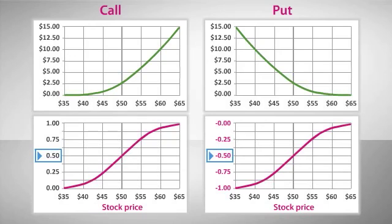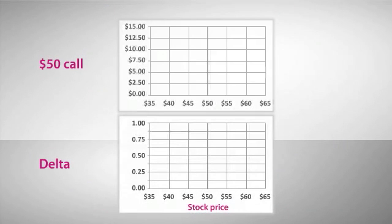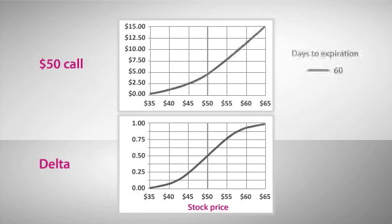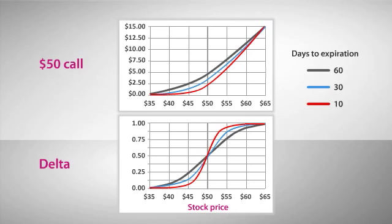One more thing to understand about delta is that it changes over time. If we look at this hypothetical call option again, we can see how both the theoretical option value and the delta changes as the option nears expiration. As time goes by, the delta becomes even more sensitive to smaller price movements near the strike price. Note that as expiration approaches, the delta of the option at the strike price is still about .5, but that it can move very rapidly with even small stock price movements.